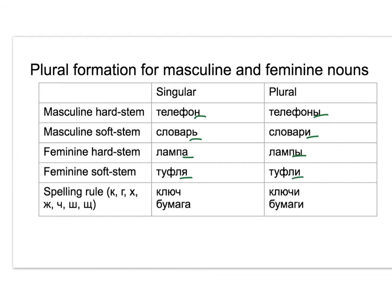We also choose E if we need to according to the seven-letter spelling rule — so after К, Г, Х, Ж, Ч, Ш, Щ.